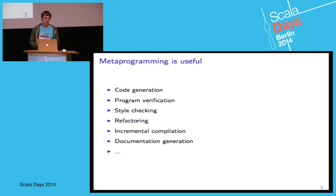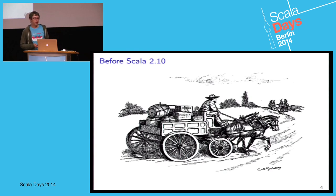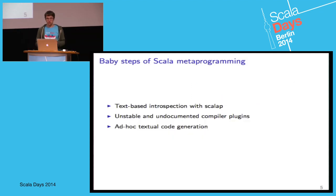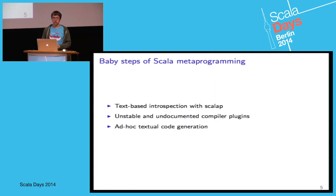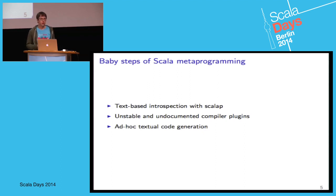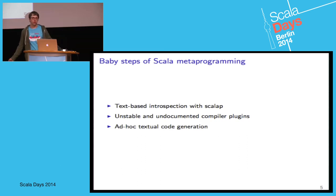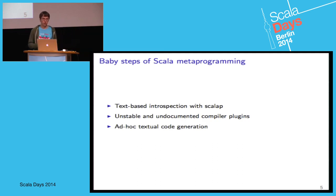Let's put things into perspective and see how metaprogramming is done in Scala. Before Scala 2.10, we had some sort of an ad hoc approach to metaprogramming. It was possible to inspect metadata — for instance, signatures of methods — using text-based output from a utility called ScalaP. It was also possible to hook into the compiler pipeline using compiler plugins, but that interface was unstable and certainly undocumented. And finally, everyone could do code generation, but it was just text — you'd throw together some strings.